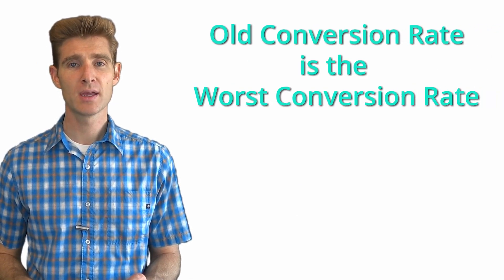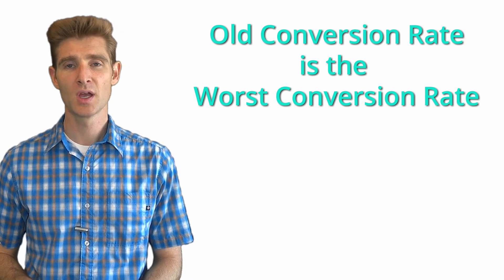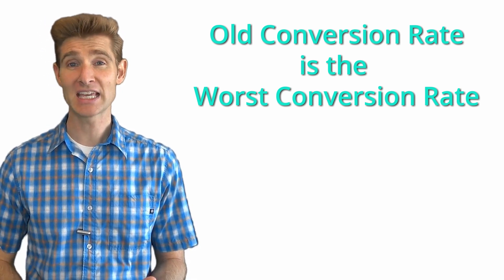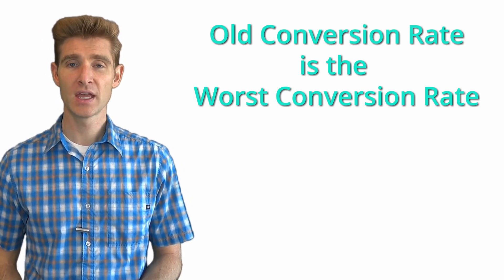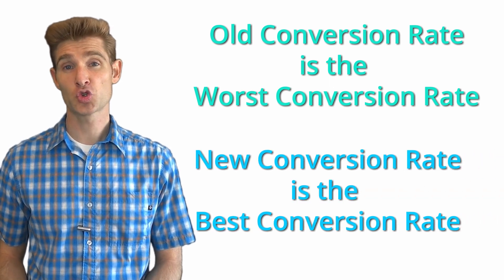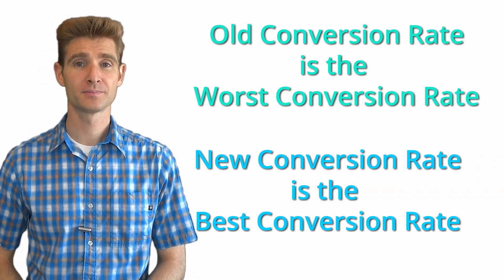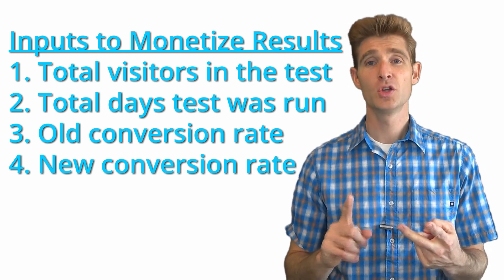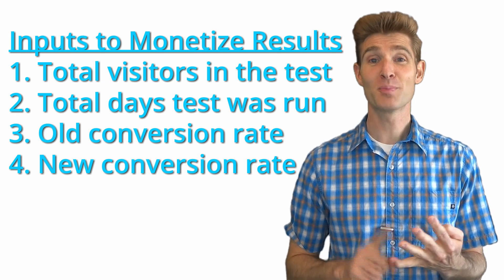The old conversion rate might just be the worst performing experience. So if your control is the winning experience and all the others had a negative lift, you still want to use the worst negative lift as the old conversion rate, and your control becomes the new conversion rate because it's the best. You do this because you want to show the potential loss you saved by testing — if the business would have launched a version with negative lift without testing, you saved the company from deploying something harmful. So your four inputs are: total visitors, total days, worst conversion rate, and best conversion rate.